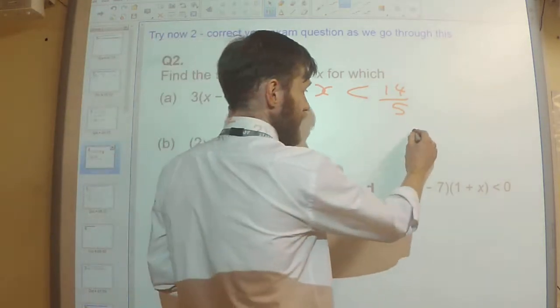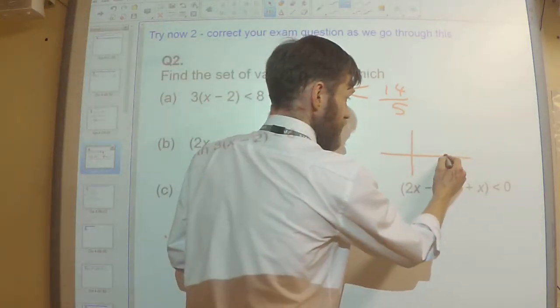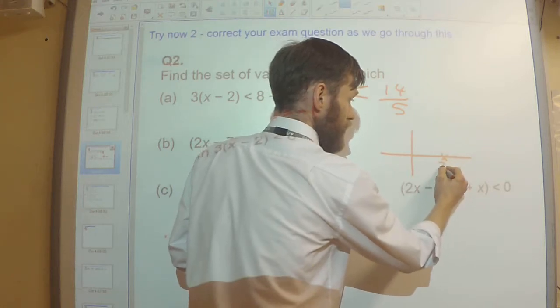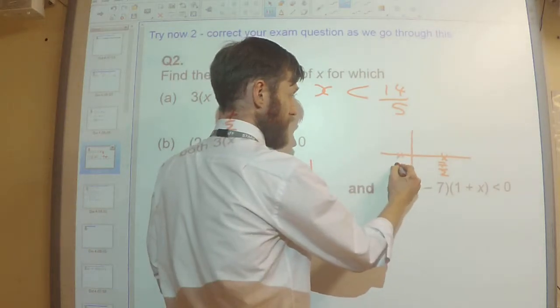So let's just draw a quick sketch. I know it's going to be equal to 0 at 7 over 2, which is roughly about there, 3 and a half, and when x is minus 1.